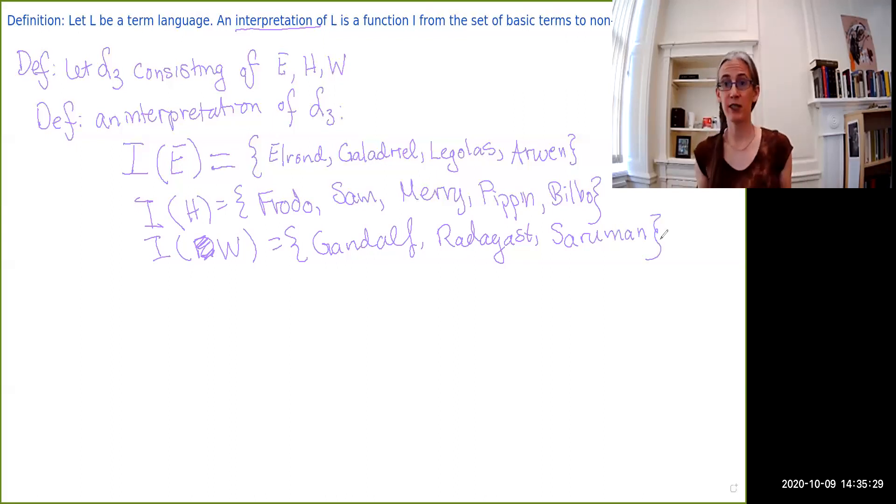Now, this is not a particularly interesting interpretation because, as you'll see, each one of the basic terms is completely disjoint from any of the other ones. So if you pick any two of these sets, there's no element that's in both of them. So pretty much the only thing that we would end up being able to say in this language is things like, no hobbit is an elf and no wizard is a hobbit. Not very interesting, but this is just for the purposes of examples. Now, I'm going to clear this completely so that we can do something a little bit more complex.